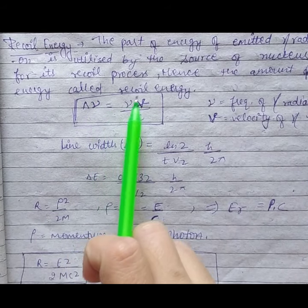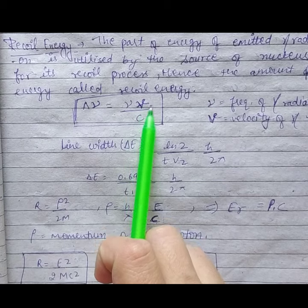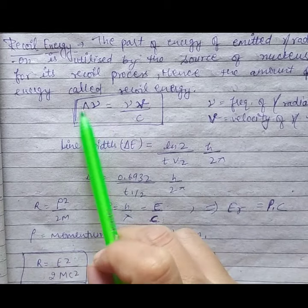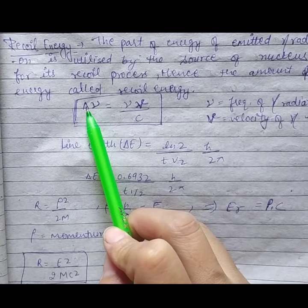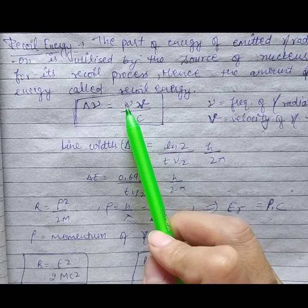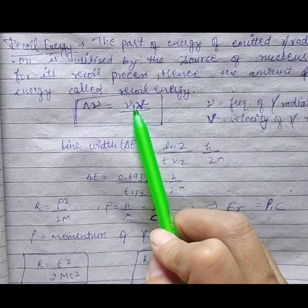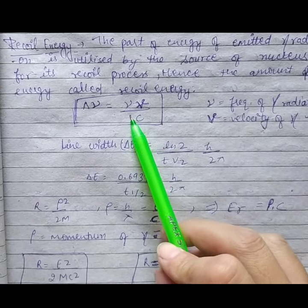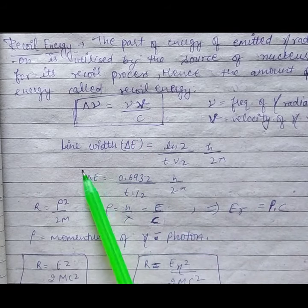Here, delta nu equals nu V by C. Here, this nu is the recoil energy. Nu is the frequency of gamma radiation, V is the velocity of gamma radiation, and C, as we all know, is the speed of light.